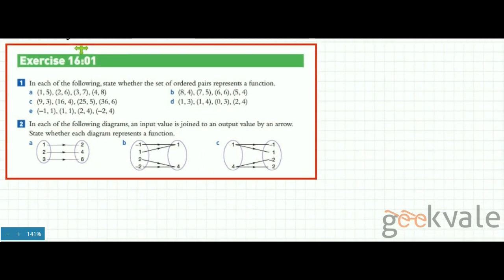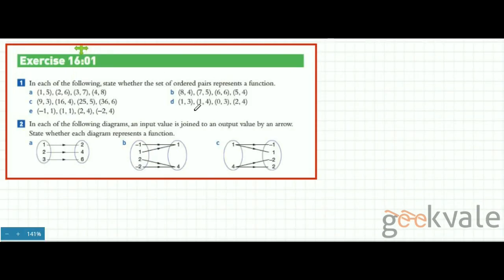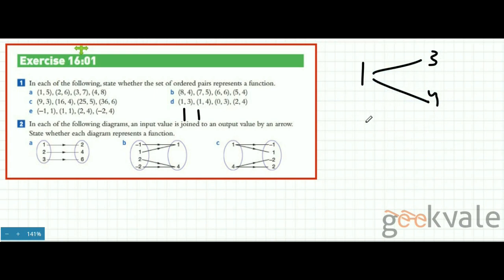Look at example D. The value 1 is repeated: 1 is mapping to 3 as well as to 4. We have two outputs with the same input, so these two outputs 3 and 4 do not have unique inputs anymore. Therefore, example D does not represent a function. You can practice the other questions using these concepts.